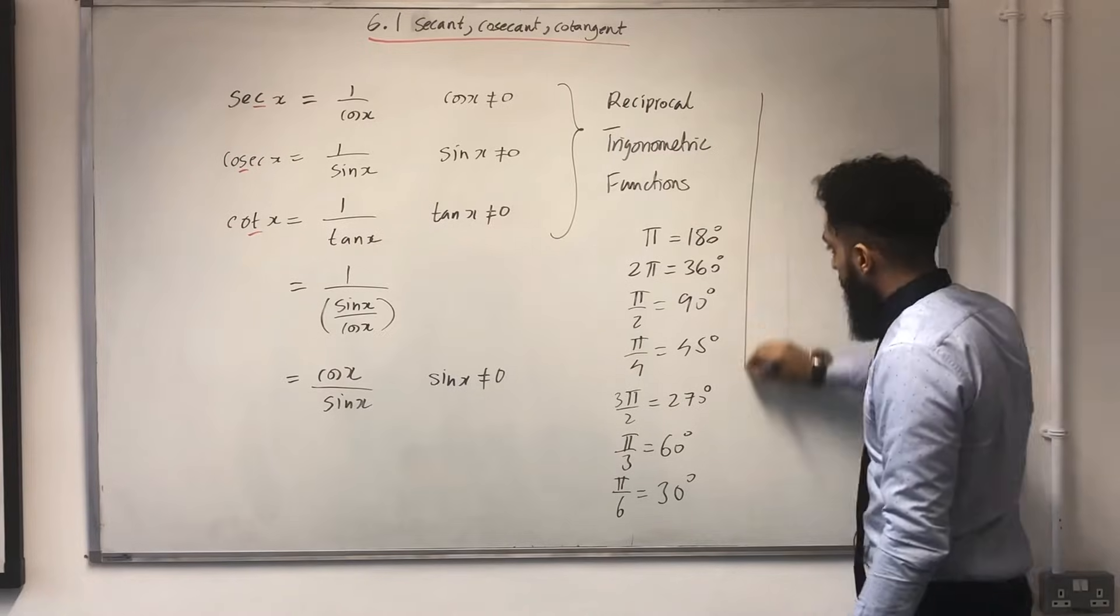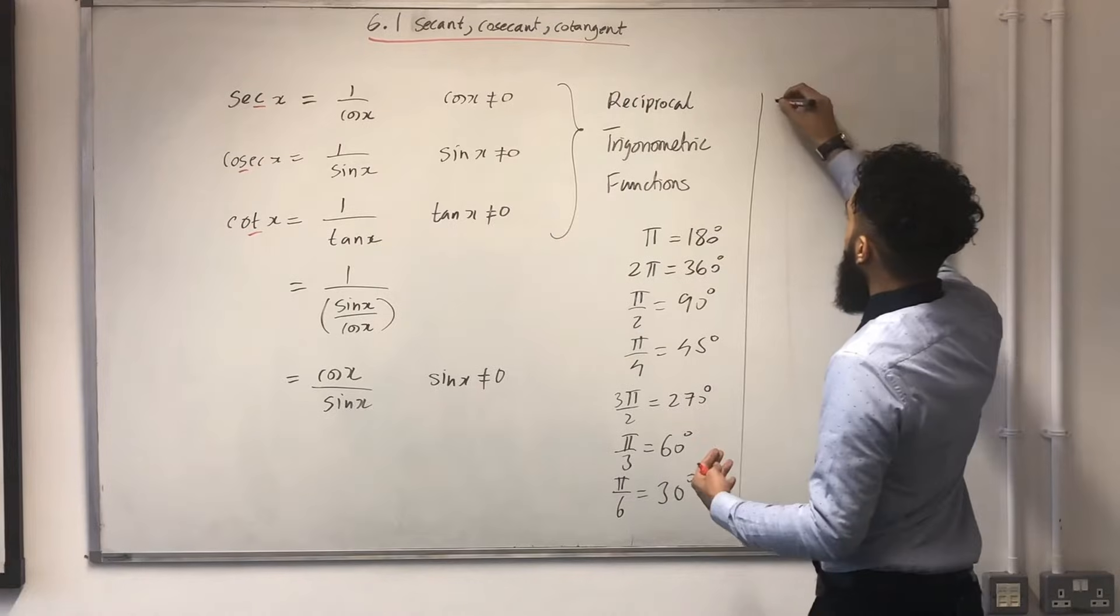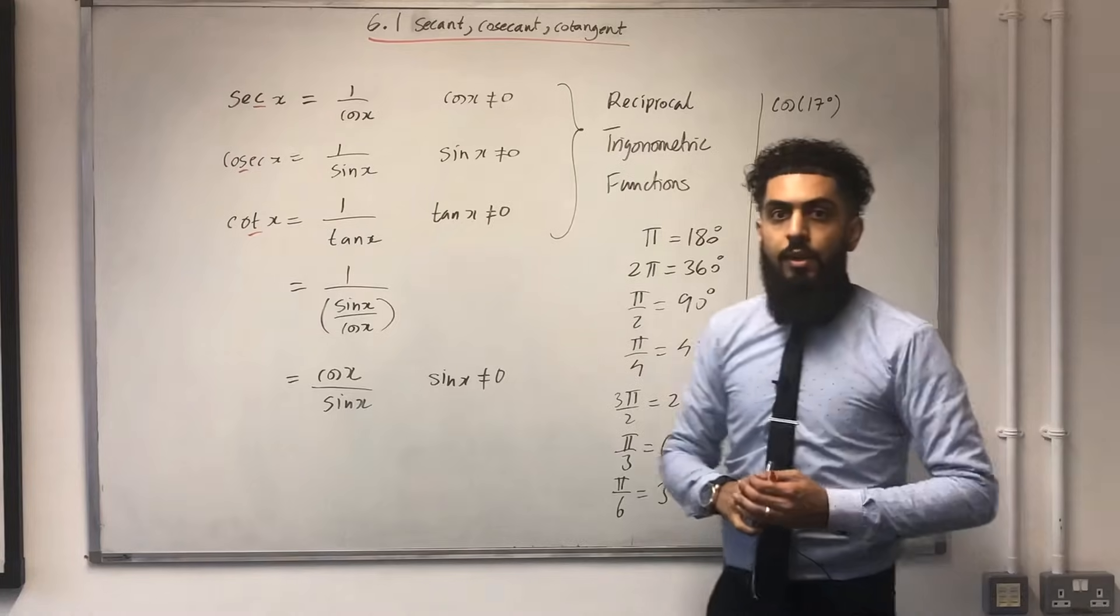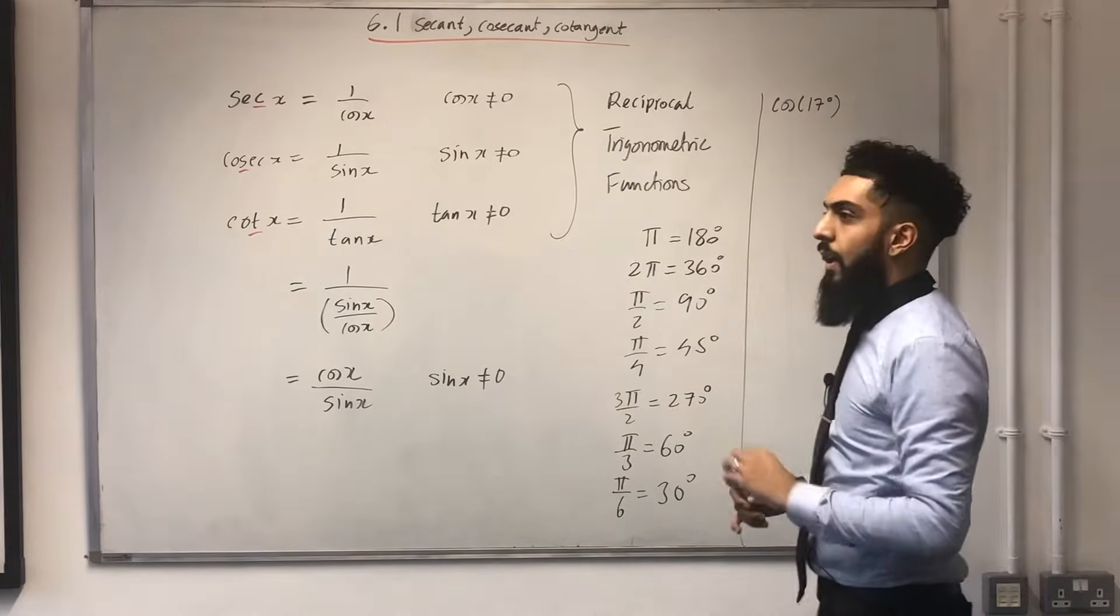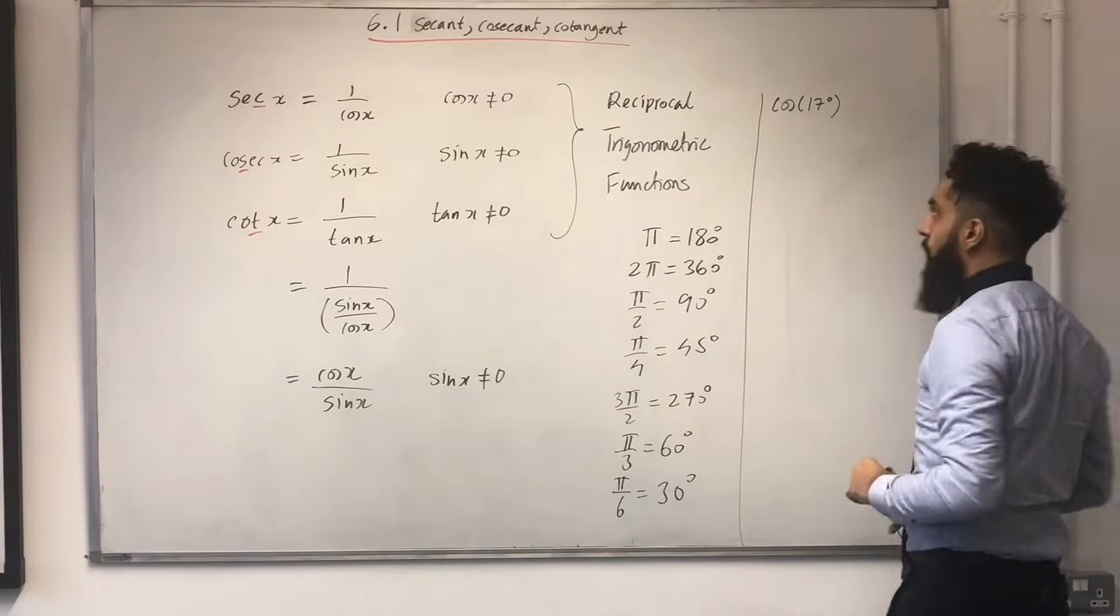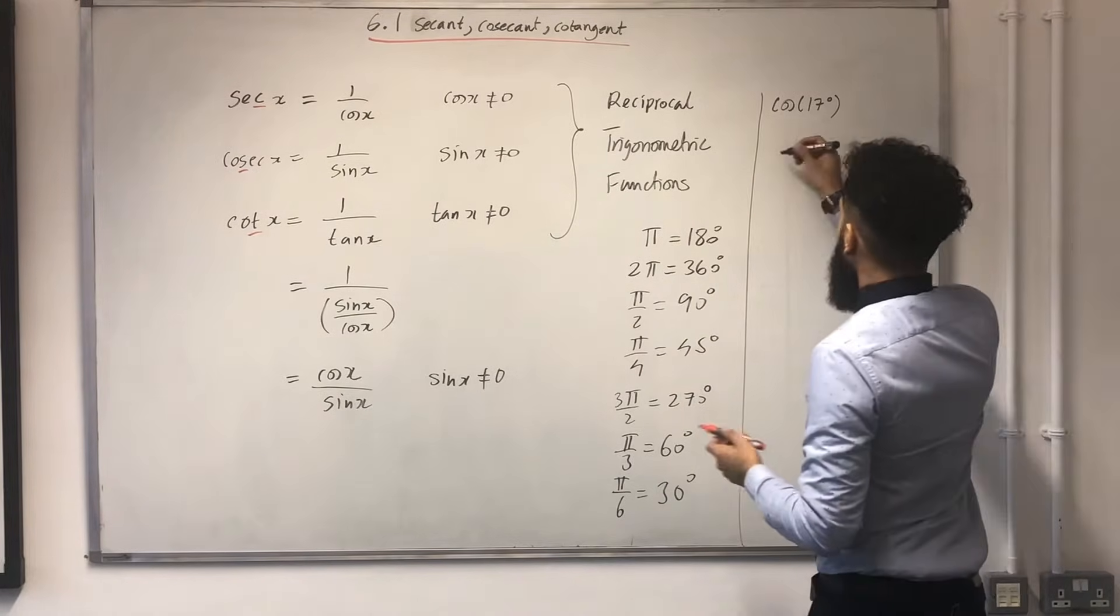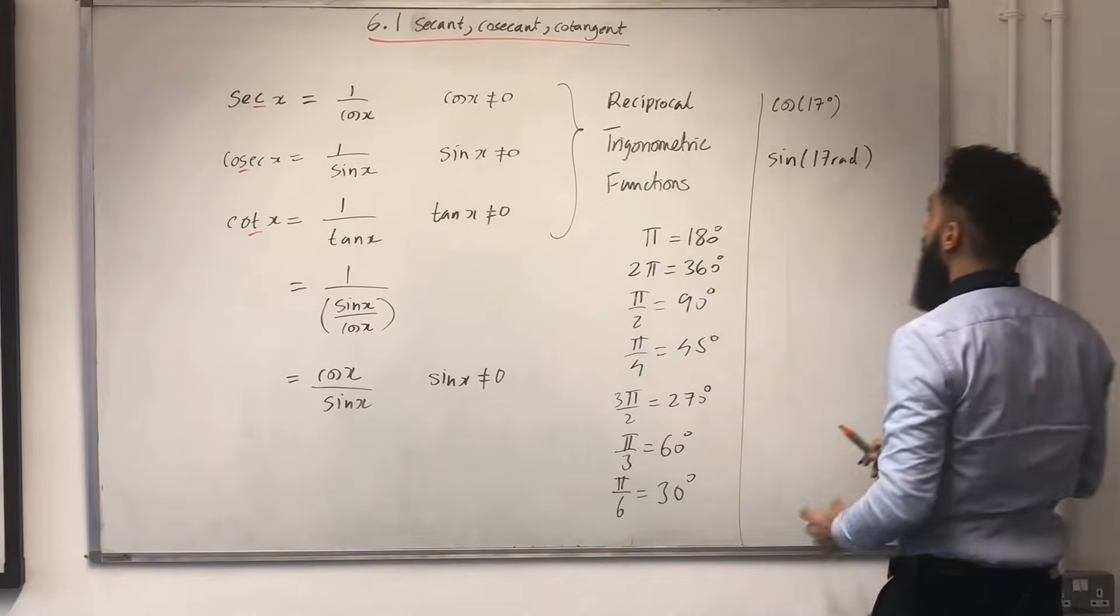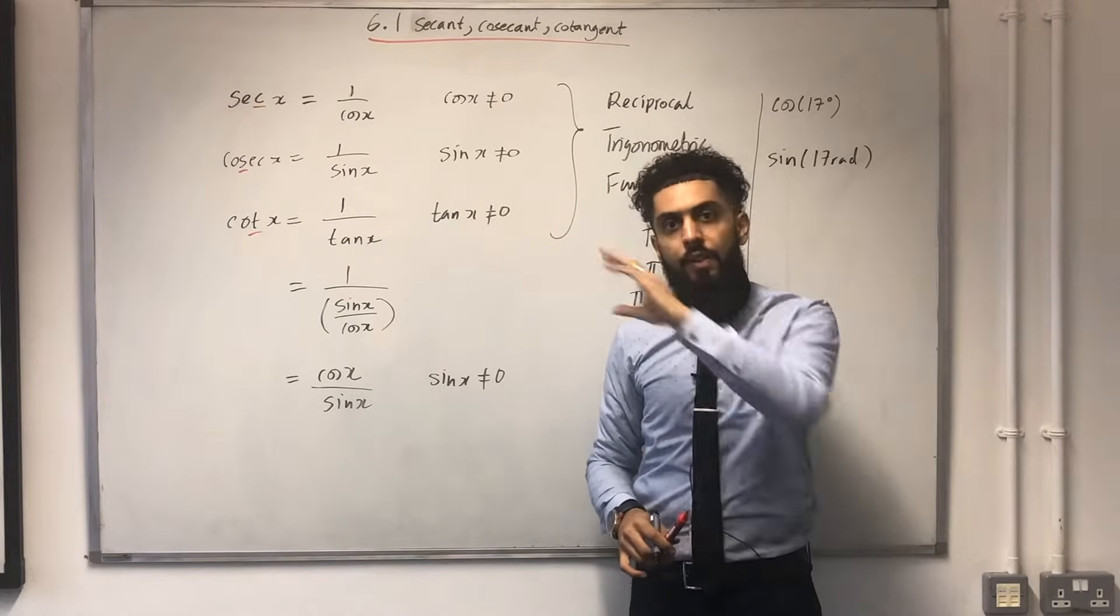Suppose in the exam, you're solving a problem and you end up with something like cos 17, which you need to calculate. Cos 17 degrees. Over here, you're calculating a trig of an angle. Very important. Have a look at the angle. In this case, it is in degrees. Make sure you put your calculator on degree mode. The next one, you could have something like sin 17 radians. Over here, the angle is in radians. Make sure you put your calculator on radian mode.